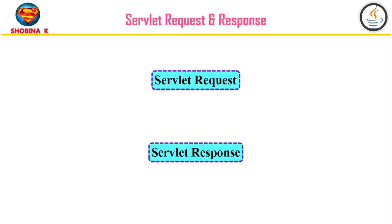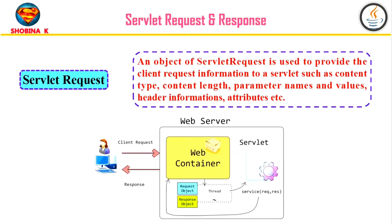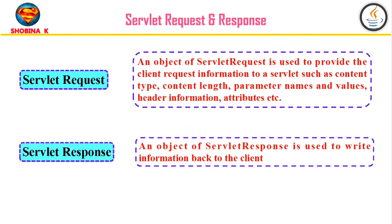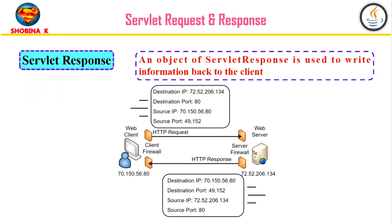Now we will understand the two important methods of the HTTP servlet class: request and response. When a client sends a request to the web server, the servlet container creates servlet request and response objects and passes them as arguments to the servlet service method. The request object provides access to request information such as header and body data. For the servlet response, the servlet container connected to the web server receives the HTTP request on a certain port, creates the request and response objects, and passes them to the service method. The response object allows you to format and send the response back to the client.